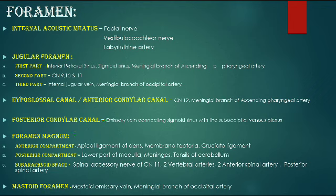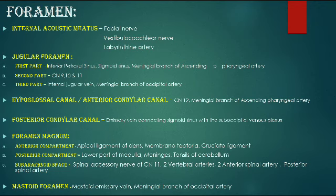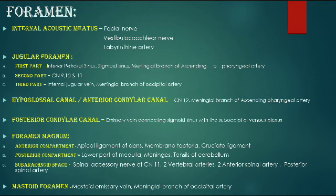Revising the foramen magnum: the anterior compartment contains the apical ligament of dens, membrana tectoria, and the cruciate ligament - in the form of a cross, between C1 and C2; the dens lies between the atlas and axis. The posterior compartment contains the lower medulla, spinal cord, meninges, and tonsils of the cerebellum. The subarachnoid space contains the spinal accessory nerve (CN XI), vertebral arteries, two anterior spinal arteries, and one posterior spinal artery.